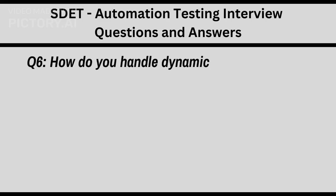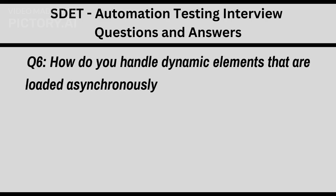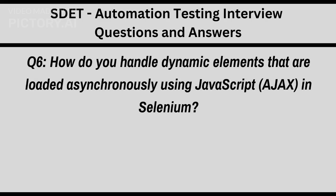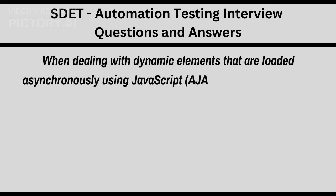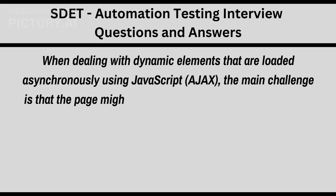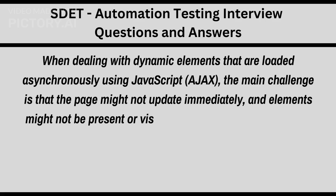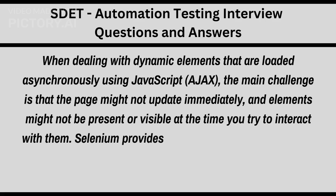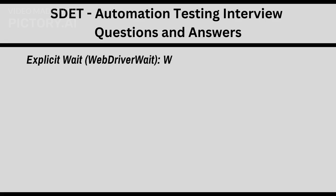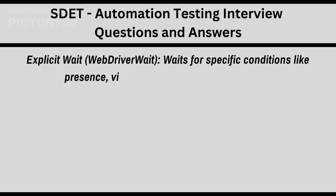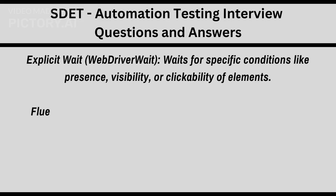Q6. How do you handle dynamic elements that are loaded asynchronously using JavaScript in Selenium? When dealing with such elements, the main challenge is that the page might not update immediately, and elements might not be present or visible at the time you try to interact with them. Selenium provides ways to wait for such elements until they are available using explicit waits.